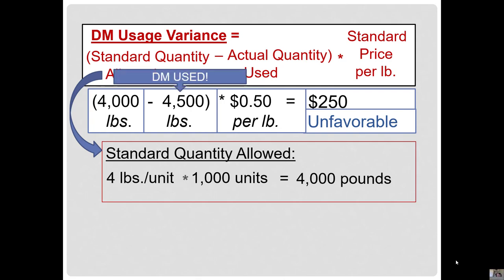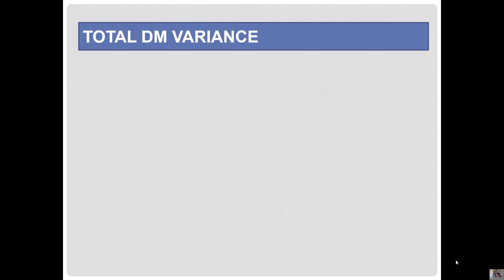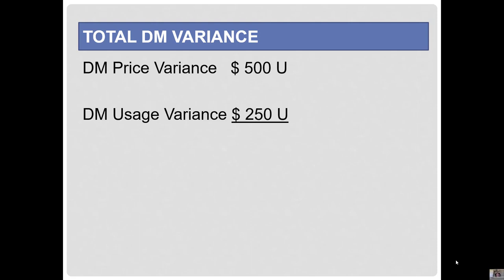Notice here that we did use the direct material used, not the direct material purchased — it's important that you notice that difference. We also computed the total dollar impact on costs. The total direct material variance: we had a price variance of $500 unfavorable and a usage variance of $250 unfavorable, meaning our total materials variance was $750 unfavorable. We can tell management we spent $750 too much on materials — $500 due to a higher price, $250 due to using too much material.